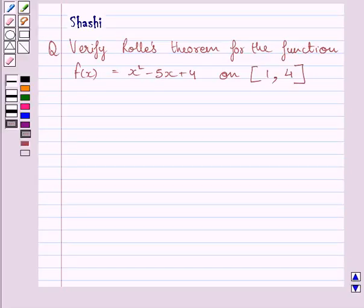Hi and welcome to the session. I am Shashi and I am going to help you with the following question. Question says, verify Rolle's theorem for the following function. Given function is f(x) = x² - 5x + 4 on closed interval [1, 4].